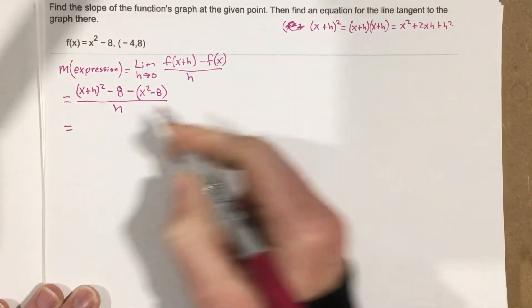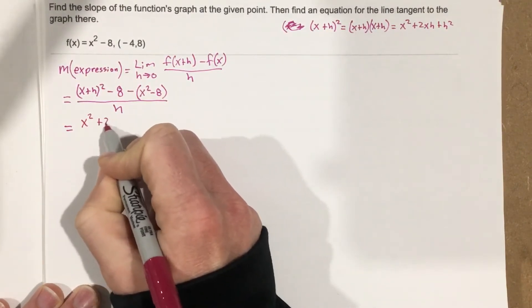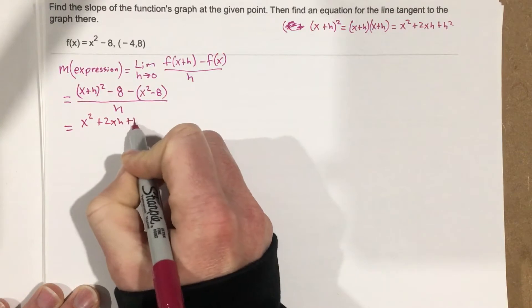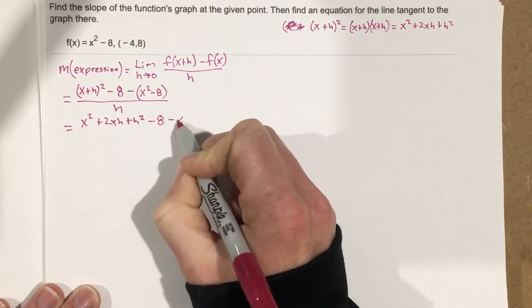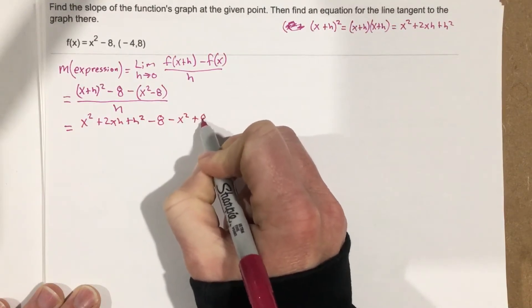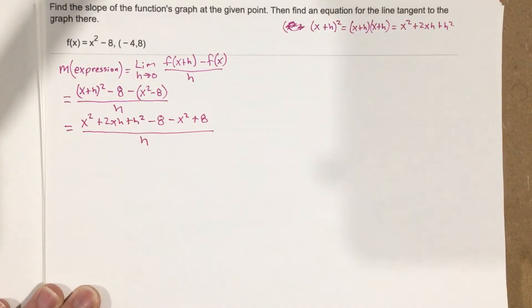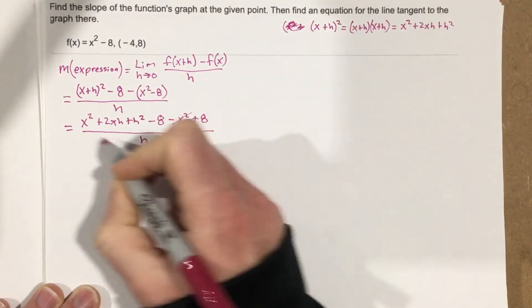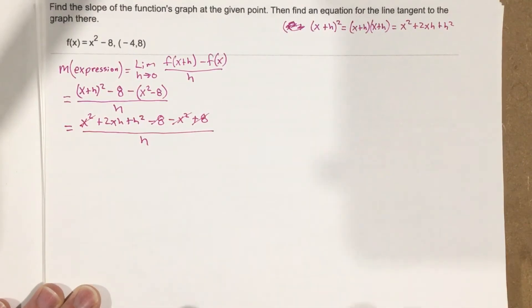So I can plug that in here and we get x² + 2xh + h² - 8 - x² + 8, all over h. Negative x² cancels with x², negative 8 cancels with 8, and we're left with...